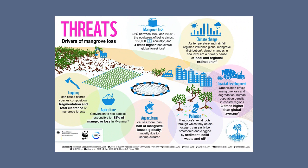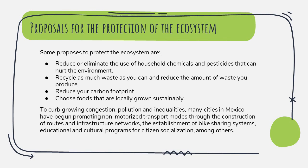Looking at the threats and drivers of mangrove loss, there was a 35% loss between the 1980s and the 2000s — four times higher than overall global forest loss. The main factors are climate change, coastal development, pollution, aquaculture, agriculture, and logging. To solve this problem, proposals for the protection of the ecosystem include: reducing or eliminating the use of household chemicals and pesticides, recycling waste and reducing waste production, reducing your carbon footprint, and choosing locally grown sustainable foods. To curb growing congestion, pollution, and inequalities, many cities in Mexico have begun promoting non-motorized transport through bike routes, bike-sharing systems, and educational and cultural programs.